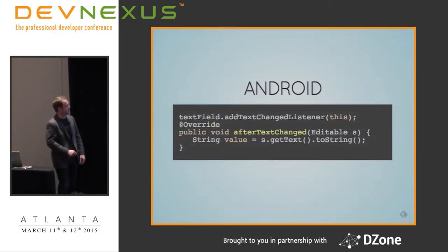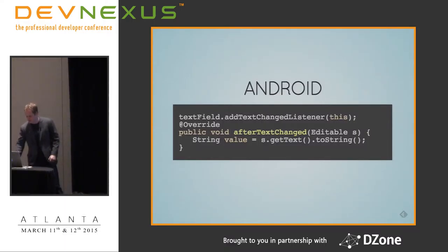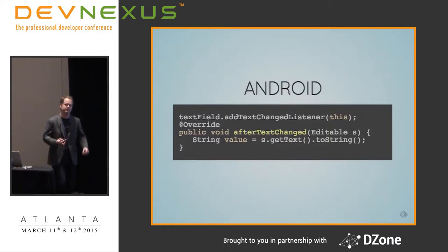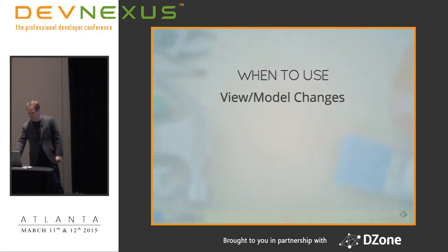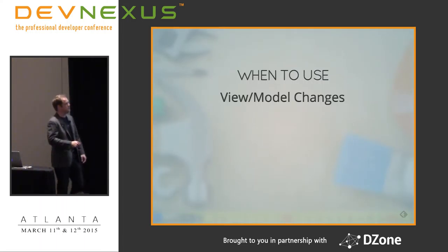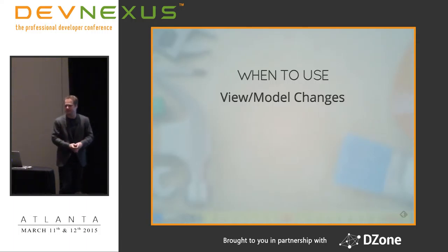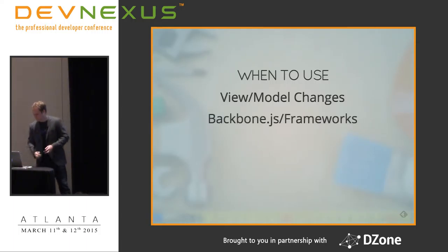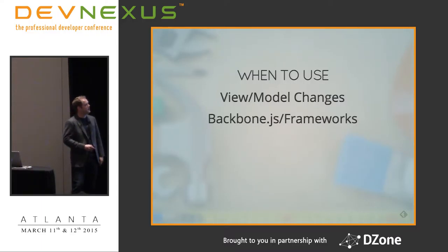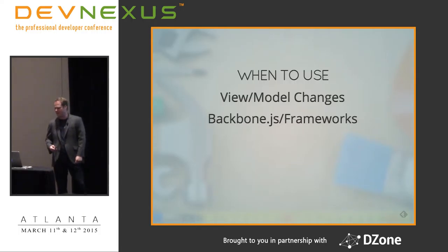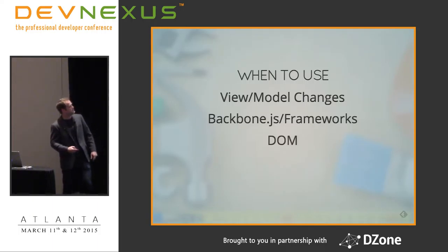In Backbone, the view listens for model changes and on-destroy events and reacts. The power is the model doesn't know anything about the view - it just broadcasts when things change. It's a great way to decouple your model changes from your views. In Node.js, you can add observability to your own objects very easily using the EventEmitter, just mix it into your class, emit change events, and have other objects register for them.